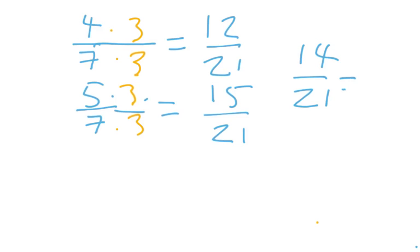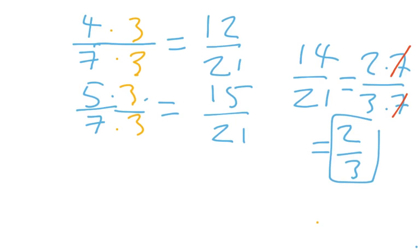And then I might realize, oh, fourteen is two times seven, and twenty-one is three times seven, so that particular fraction would reduce, and that would tell me that another example of a rational number between four-sevenths and five-sevenths would be two-thirds. That's kind of unexpected.